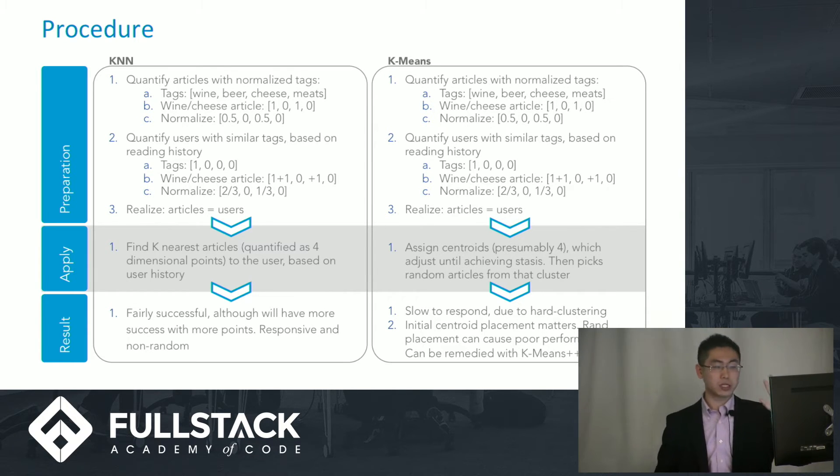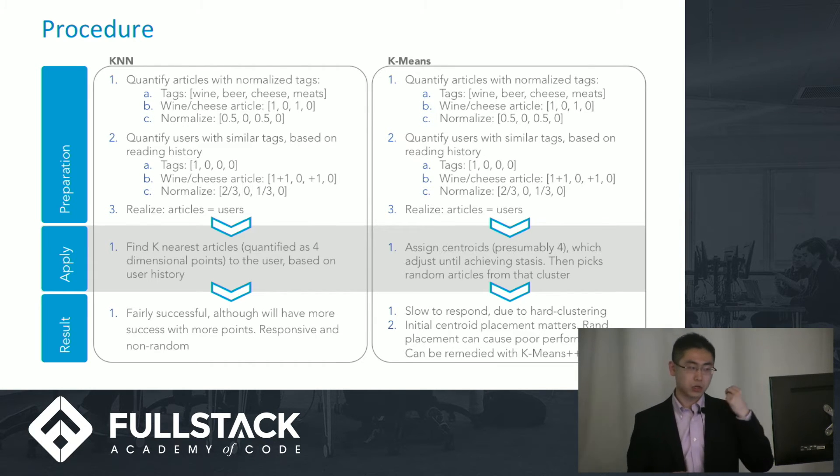Perhaps not in real life, but at the very least within the scope of my application here, you're seeing that users are also looking at these articles with these four tags. So whatever they read, for example, let's say they read a wine and cheese article. To start off, let's say this person has read one wine article. So they'll have one inside their wine index.